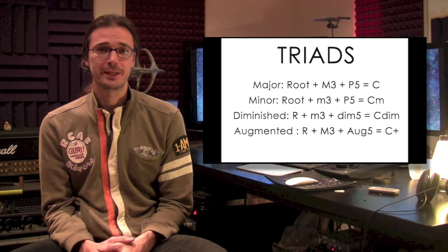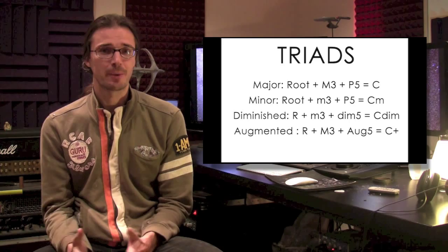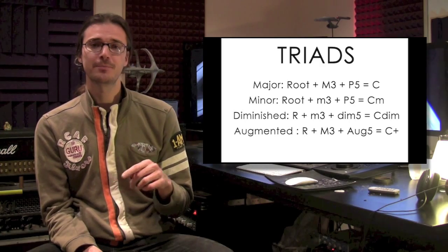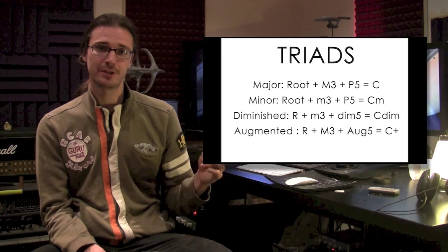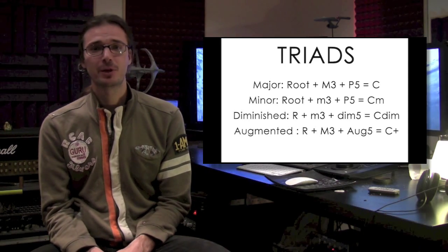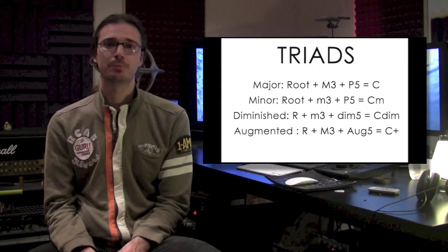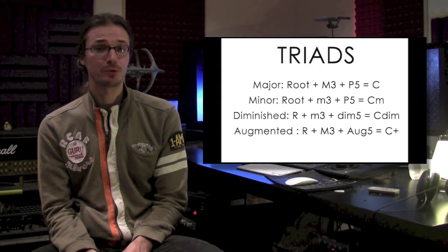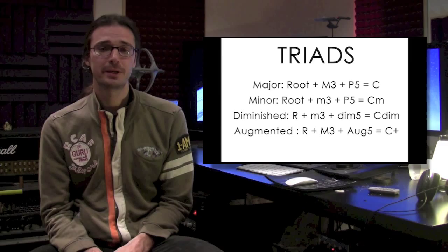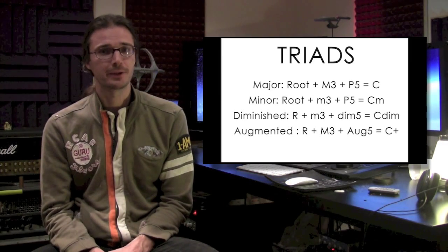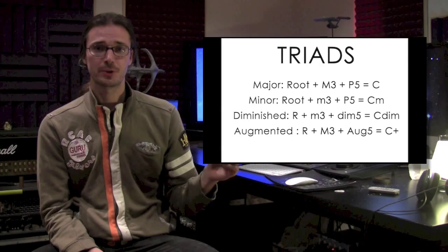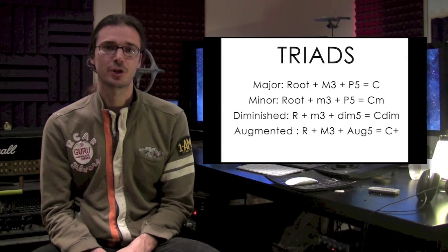Major and minor are the two main triads — you play them 90% of the time. Then there's the diminished chord, which is very important because it shows up in major and minor keys. For a C diminished chord: root (C), minor third (E-flat), but instead of the perfect fifth, you pick the diminished fifth (G-flat). Finally, there's the augmented triad, which shows up in jazz scales and harmonic minors. It's root, major third, and augmented fifth. In C, that's C to E (major third) and then G-sharp (perfect fifth raised a half step).